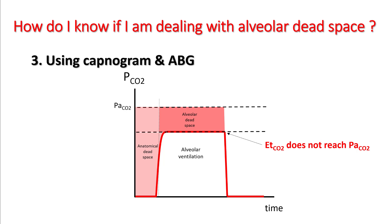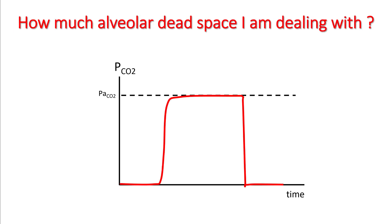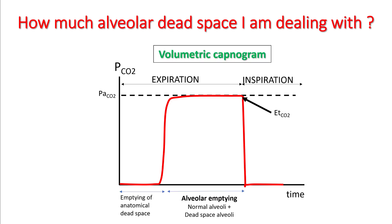Using a volumetric capnogram along with an arterial blood gas can help you figure out if you have alveolar dead space. In this situation, what you are noting is that your end tidal CO2 does not reach the arterial CO2. The next question is: how much alveolar dead space are you dealing with? For this, you need to look at your volumetric capnography, which was covered in a previous lecture.